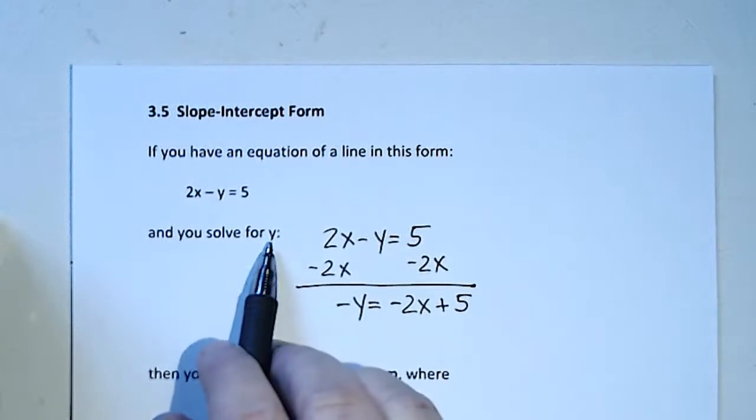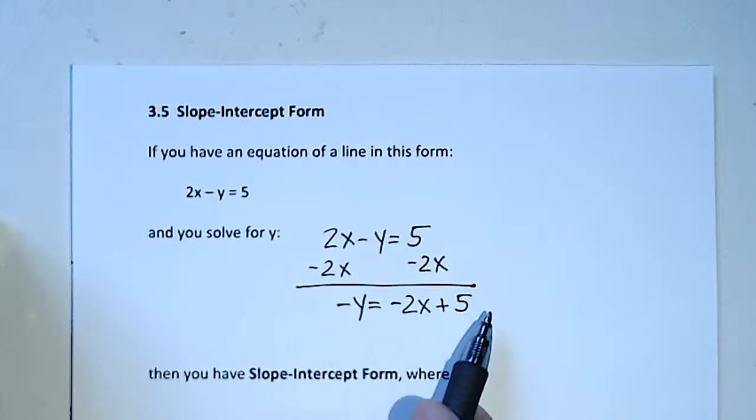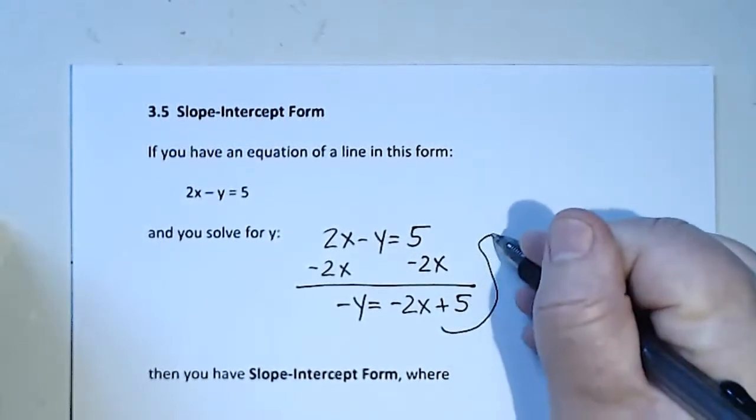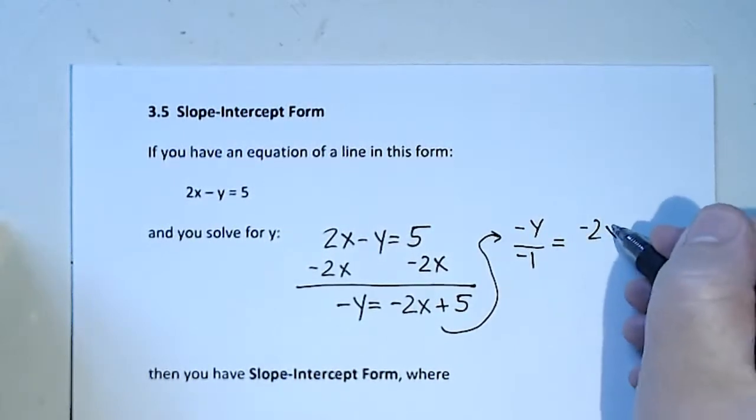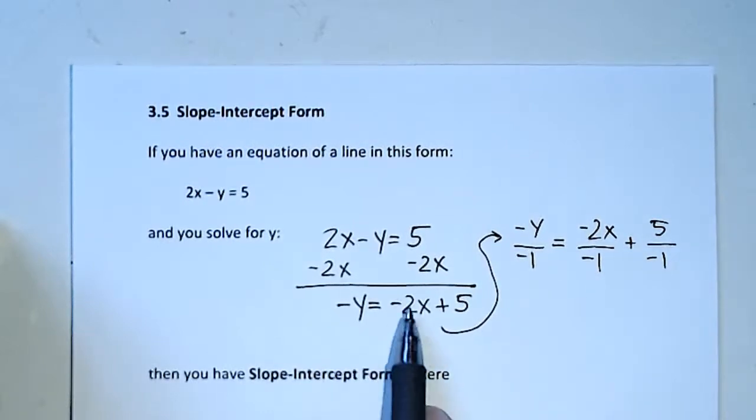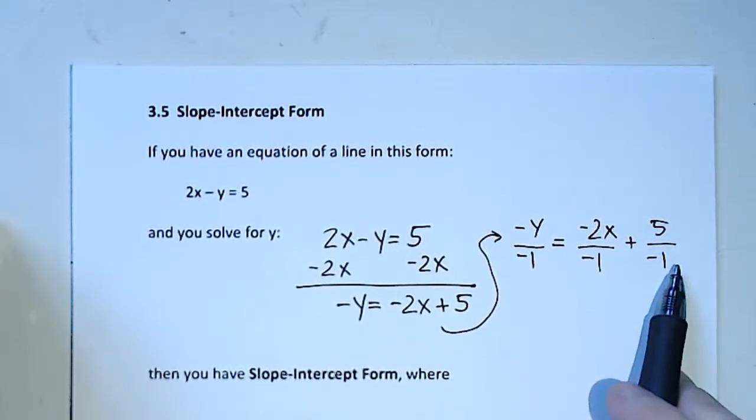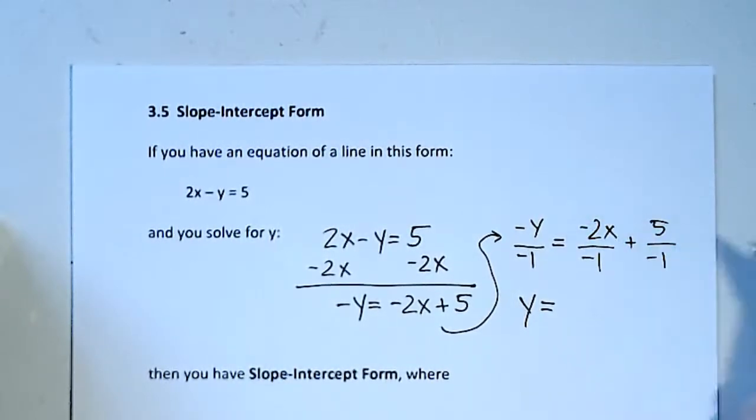To get rid of this minus in front of y, I'm going to divide every term on both sides by -1. Make sure you don't skip anybody - even the 5 gets its own -1. Three terms, three minus ones.